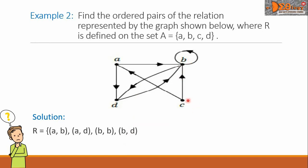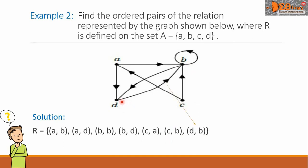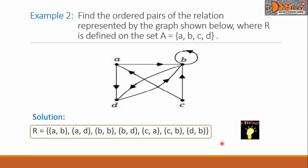Let us proceed with point C. The first arrow goes from point C to point A, so we write CA. Another arrow goes from point C to B, so we write the ordered pair CB. There are no more arrows going out from C. For point D, there is only one arrow, going from point D to point B, so we write the ordered pair DB. We now have the complete relation, and this is the final answer.